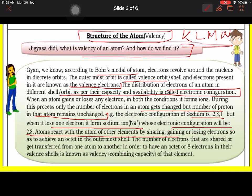Atoms react with atoms of other elements by sharing, gaining, or losing electrons so as to achieve an octet in the outermost shell. The number of electrons that are shared or get transferred from one atom to another in order to have an octet or 8 electrons in their valence shell is known as valency.